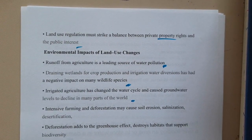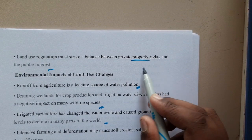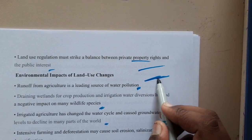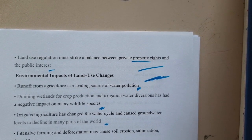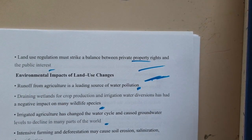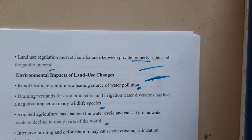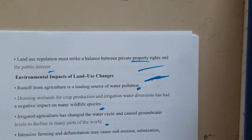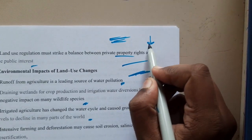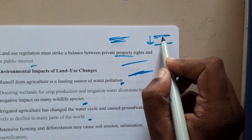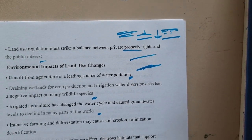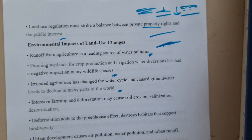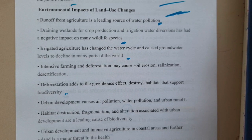Irrigated agriculture has changed the water cycle and caused underground water levels to decline in many parts. In a metropolitan or normal city, the surface is completely covered with roads and buildings, leaving very little moist soil for water to seep underground. That is the reason why underground water levels are really declining nowadays — usage is increasing but water recharge is very minimal.